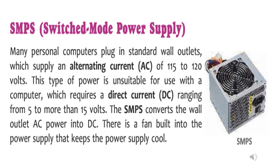Children, let us move to switched mode power supply. We mostly use normal power plugs for our computers. The power plugs at our homes or school buildings have alternating current, that is AC, which ranges from 115 to 120 volts. That is very high for our computer systems. Our computer systems require DC — direct current — ranging from 5 to more than 15 volts.